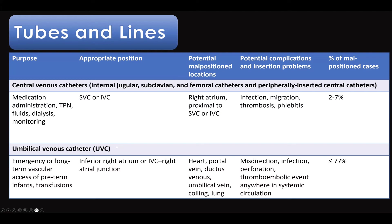An important topic in pediatric age group is the umbilical venous catheter in the NICU. The correct position is the inferior right atrium or the junction between the atrium and the inferior vena cava. Possible malpositioned locations include the heart, portal vein, ductus venosus, umbilical vein, coiling, or even the lung. Complications include infection, perforation, thromboembolic events, and liver abscesses — I saw a case last month. The incidence of malposition in umbilical venous catheters can reach 70% of cases, making this a very important topic, especially in the FRCR exam.